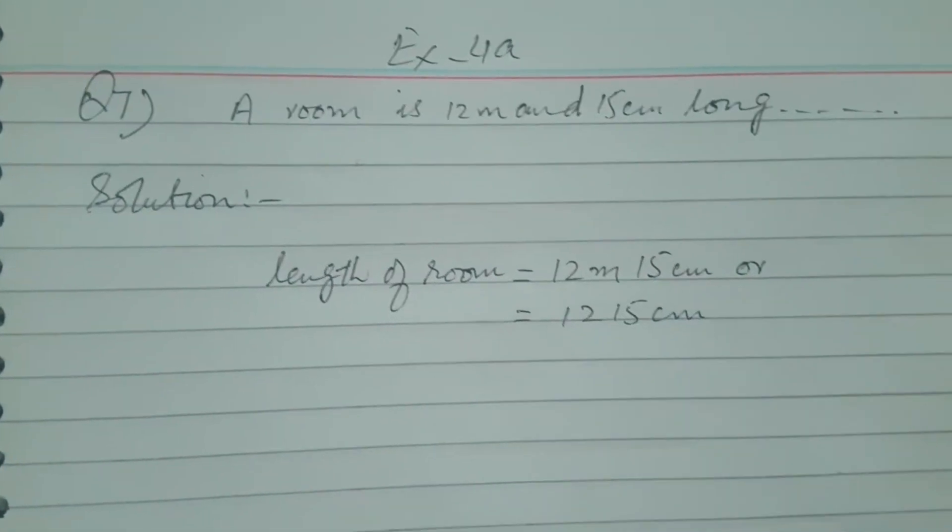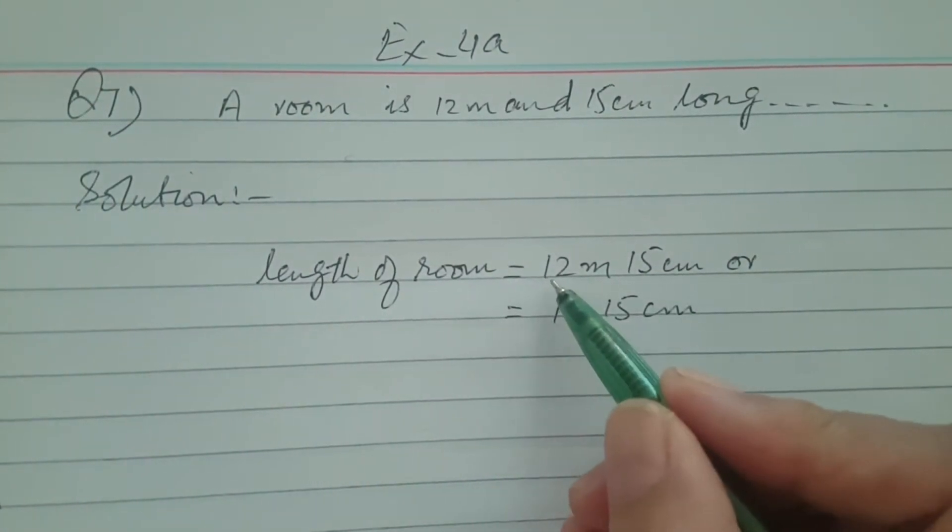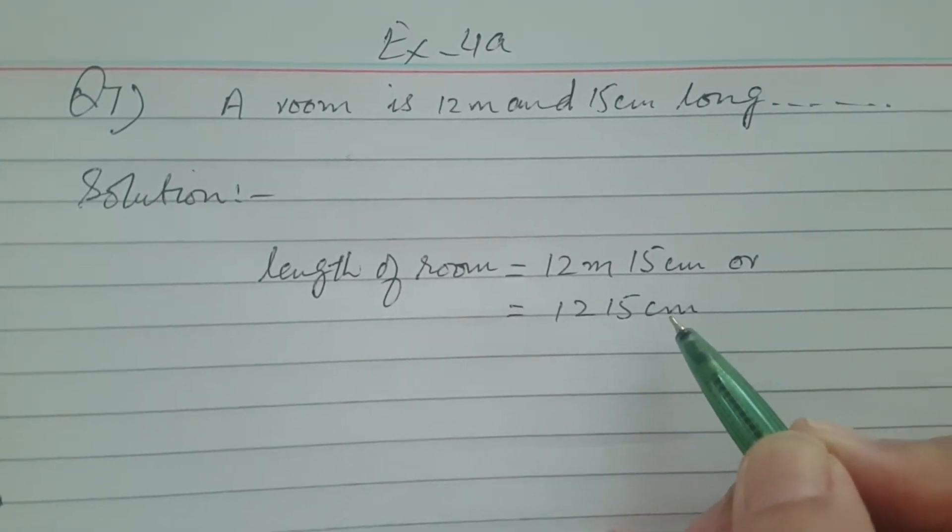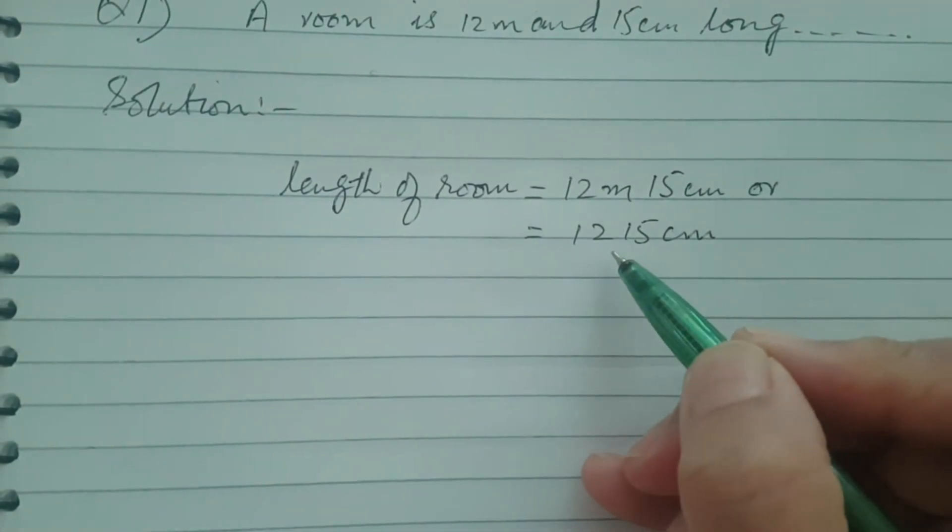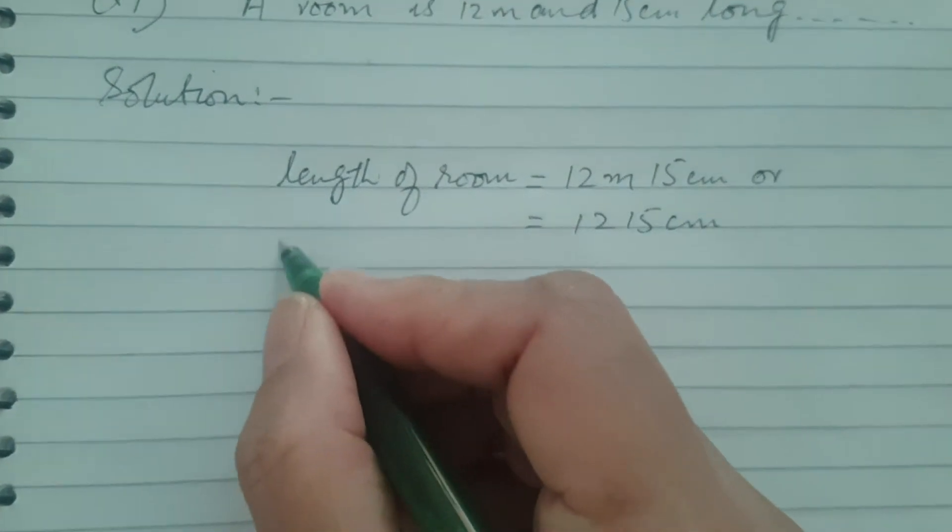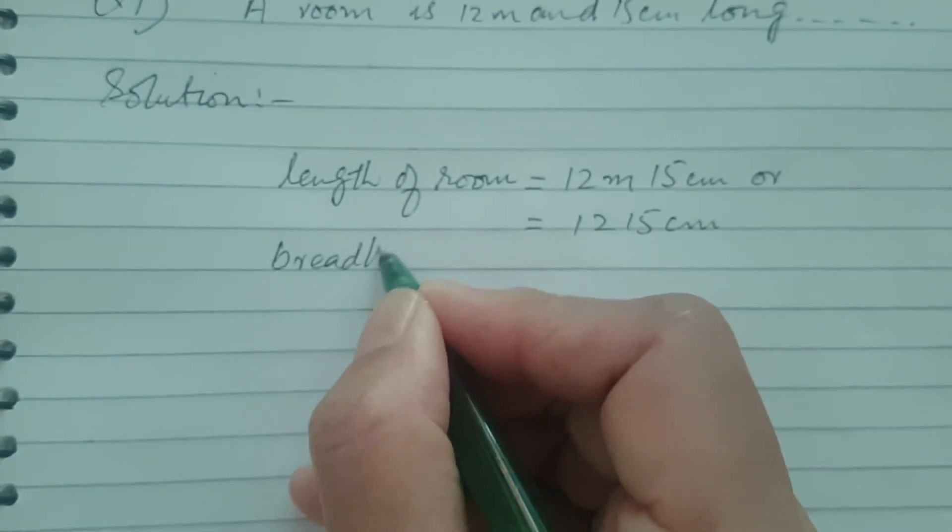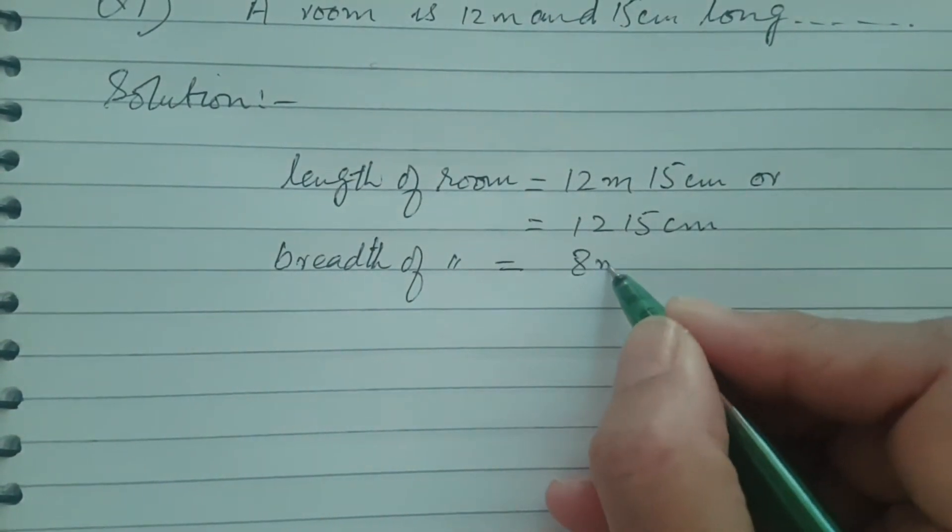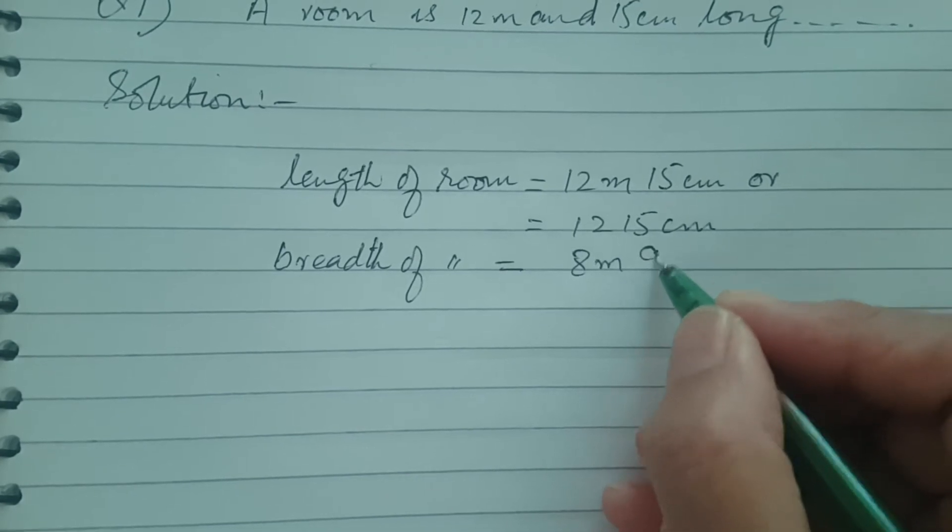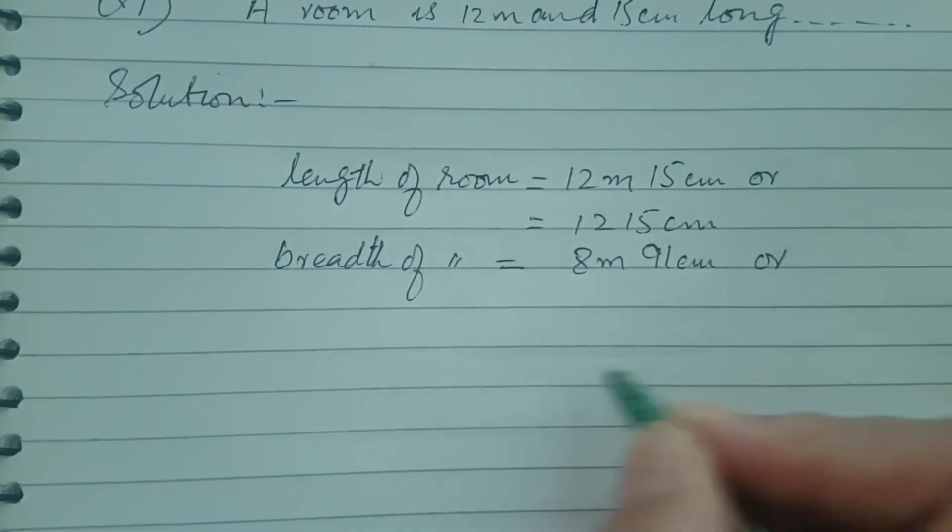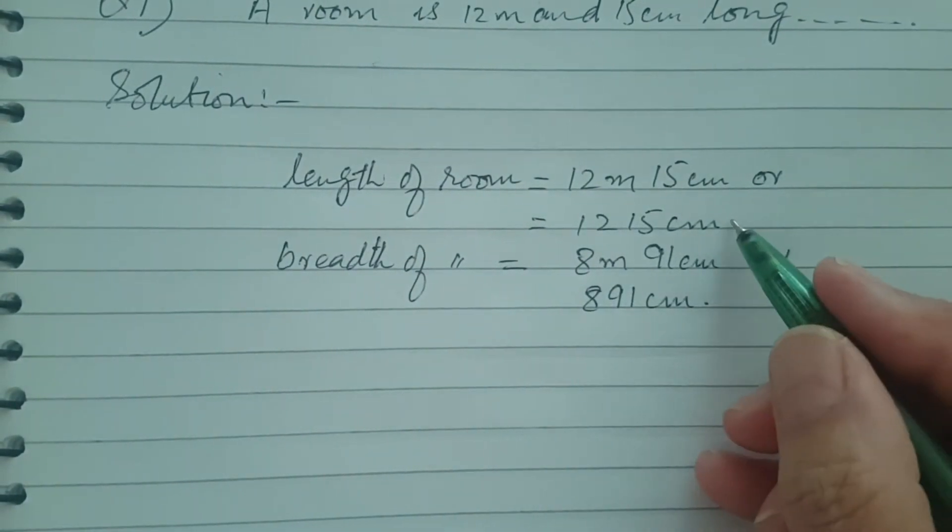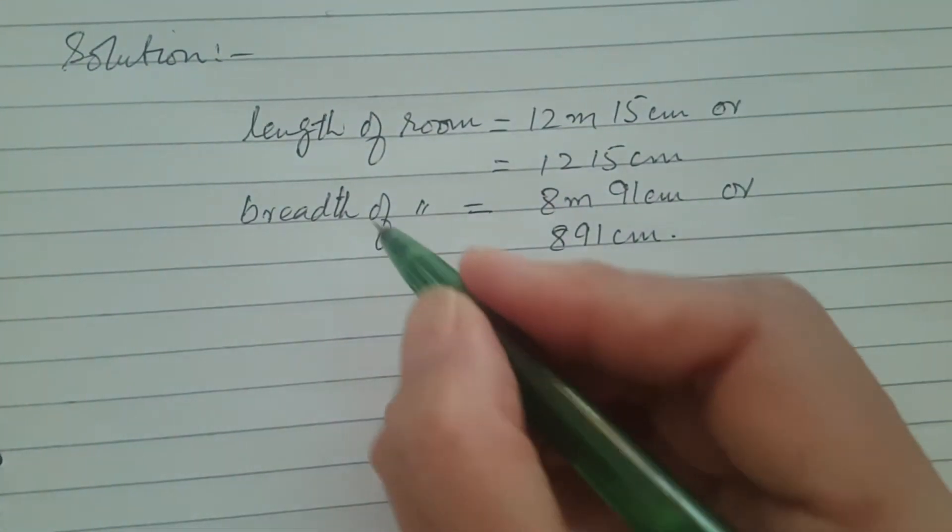Now you can say 1215 centimeters. You change the meters: 12 multiply by 100 is 1200, so 1200 plus 15 gives you 1215 centimeter. So length of room is now 1215 centimeter. Breadth of room is given 8 meter and 91 centimeter or you can say 891 centimeter. Now you have same units with the length and breadth.